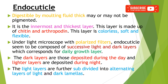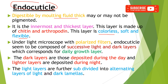Now coming to the endocuticle. This endocuticle is digestible by the molting fluid secreted at the time of molting. It may or may not be pigmented and is colorless, soft, and flexible because it is mainly composed of chitin and arthropodin, not sclerotin. Compared to the exocuticle, the endocuticle is the innermost and thickest layer of the procuticle.